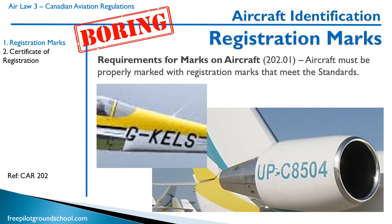Let's start with talking about registration marks. Every aircraft registered in Canada and pretty much every country requires registration marks. They must meet the standards contained within the CARs. You can see here on the left, we have a home-built aircraft, G-KELS, that I believe is from Great Britain, because the G — the Canadian ones start with a C.